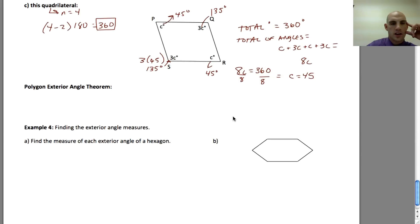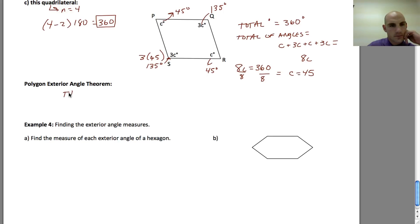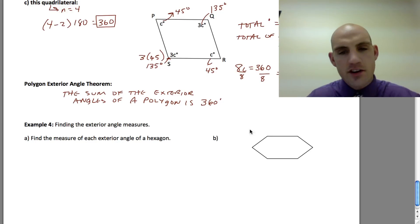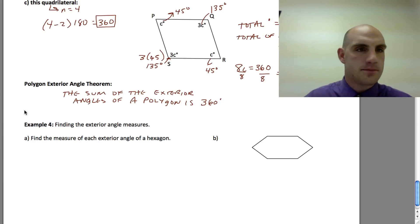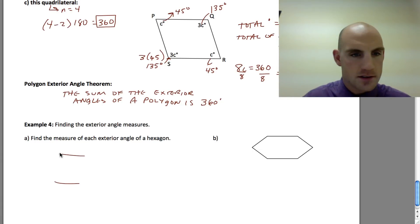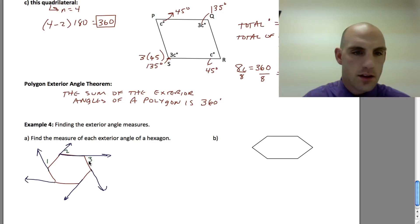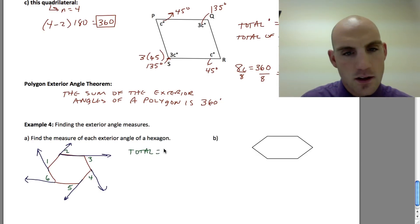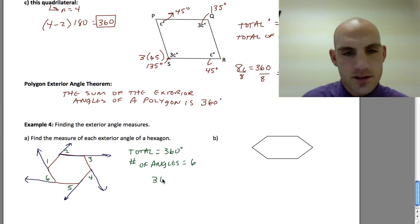Let's talk about the Exterior Angle Theorem. The sum of the exterior angles of any polygon is 360 degrees. For a hexagon, the six exterior angles are labeled 1 through 6, and the total equals 360 degrees. Since the number of angles is 6, each exterior angle of a regular hexagon is 360 ÷ 6 = 60 degrees.